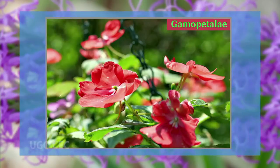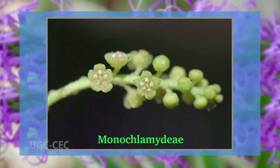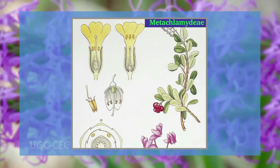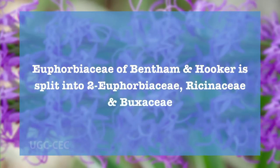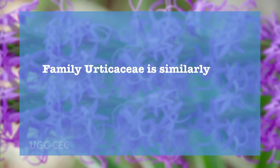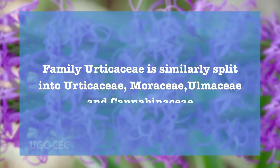The abolition of Polypetaly, Gamopetaly, Monochlamydae, Archichlamydae, and Metachlamydae, and rearrangement of taxa on the combination of characters, and not one or a few characters as in earlier systems, is more logical. Many large unnatural families have been split into smaller natural ones. Euphorbiaceae of Bentham and Hooker is split into Euphorbiaceae, Ricinaceae, and Buxaceae. The family Urticaceae is similarly split into Urticaceae, Moraceae, Ulmaceae, and Cannabinaceae. Standards of description are very high, and useful keys are provided for the identification of families.